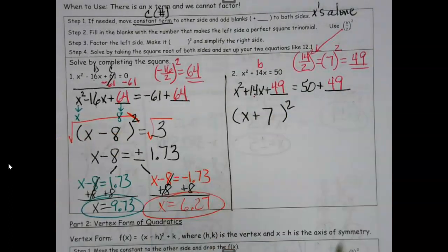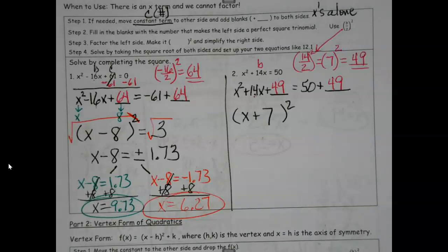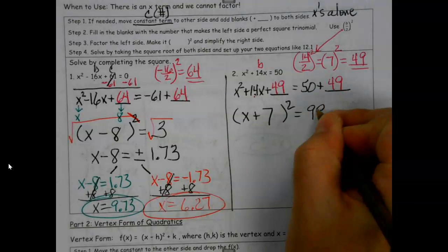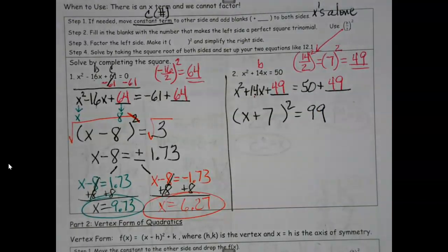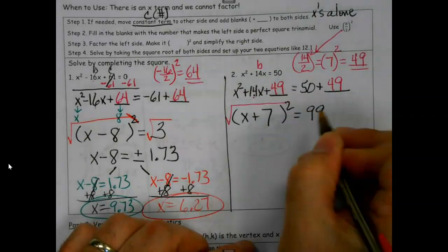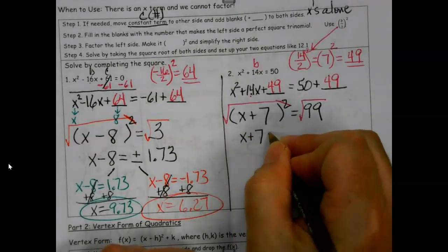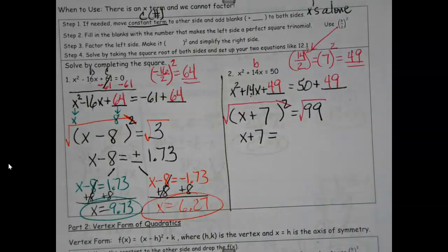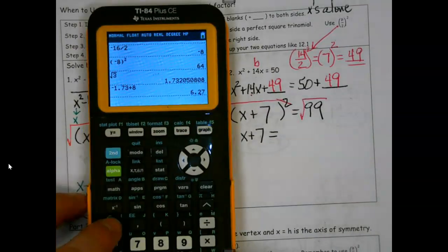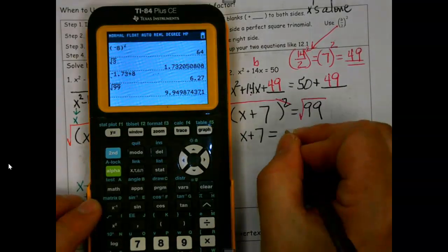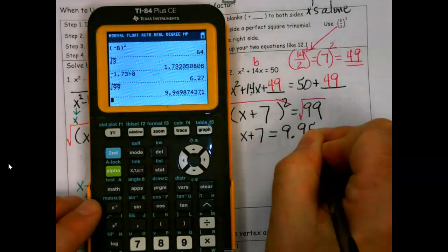Here's the speedy part: what's half of positive 14? 7. Notice I didn't even have to do the other little part down here. If you just take the number in the middle with x and cut it in half - negative 16 divided by 2 is negative 8, positive 14 divided by 2 is 7 - that part's going to be done for you already. So you get to here, and this again is like what we've been doing for the past couple of days.